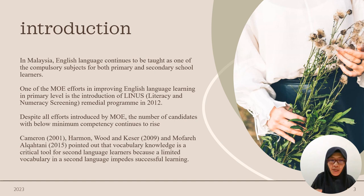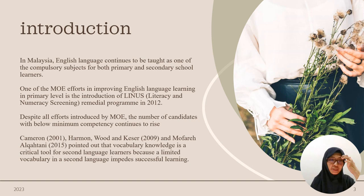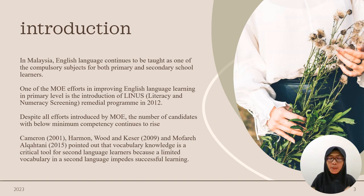The LINUS program — Literacy and Numeracy Screening — aims to identify learners who have literacy problems in terms of reading, writing, and counting. Learners at primary level sit for a test, and based on the results, schools identify whether a child needs more help in reading, writing, and numeracy skills. Through this program, schools are able to identify those with literacy and numeracy problems.